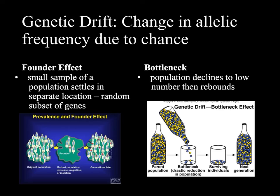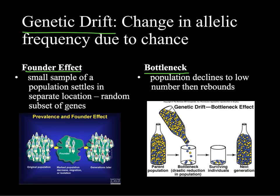In addition to the environment and sexual selection, other things can change a gene pool or allelic frequency — sometimes just due to chance. That's known as genetic drift. Two examples are the founder effect, when a small sample of a population ends up in a separate location and repopulates that space, and the bottleneck effect, when a population drops very low and then increases again. In both cases, who survives randomly can change the overall genes in the population.